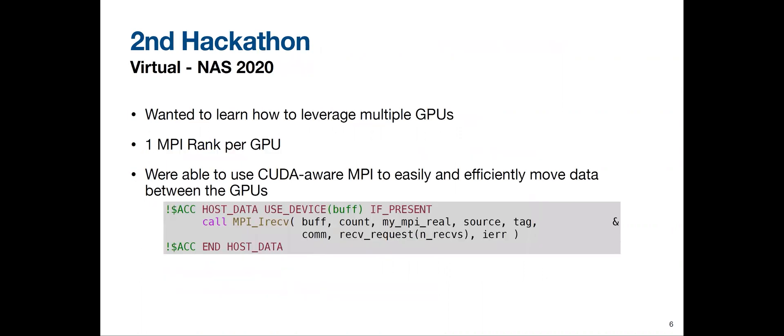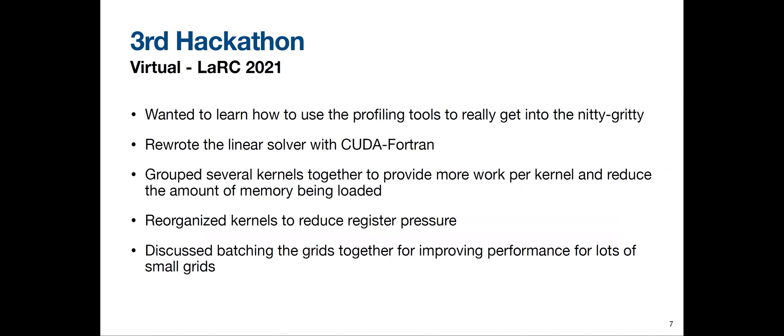The second hackathon was a virtual event hosted by NASA Ames in California in 2020. We focused on learning how to leverage multiple GPUs, which is where we worked on the Overset Boundary Exchange mini app. Our approach is one MPI rank per GPU, using CUDA-aware MPI to efficiently move data between GPUs. With the OpenACC host data pragma, we can specify that the buffer lives on the device and use that device pointer. Because the MPI implementation is CUDA-aware, it can efficiently move data from one GPU to another — pretty painless, as long as you have a working CUDA-aware MPI, which I understand is not trivial.